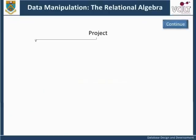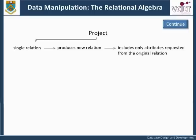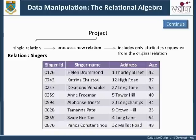Project is used on a single relation and produces a new relation that includes only those attributes requested from the original relation. This operation has the effect of choosing columns from the table, with duplicate entries removed. The task here is to extract the names of the singers without their ages or any other information. Note that if there were two singers with the same name, they would be distinguished in the relation singers by having different singer ID numbers.